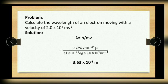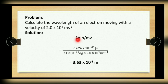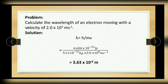Let us solve a problem using de Broglie's equation. Calculate the wavelength of an electron moving with a velocity of 2.0 × 10⁴ m/s. Using λ = h/mv, we know h (Planck's constant) and the mass of the electron is 9.1 × 10⁻³¹ kg, with the velocity given in the problem. Substituting all values, we get λ = 3.63 × 10⁻⁸ m.